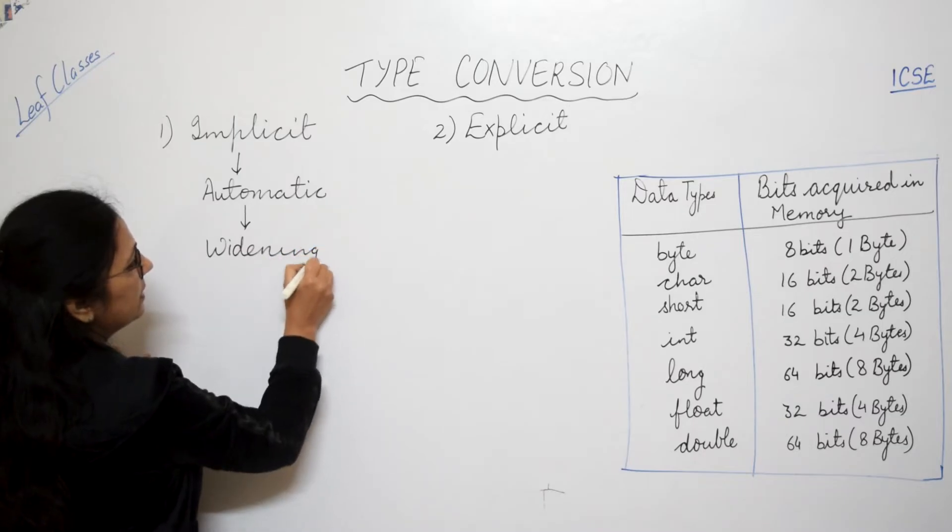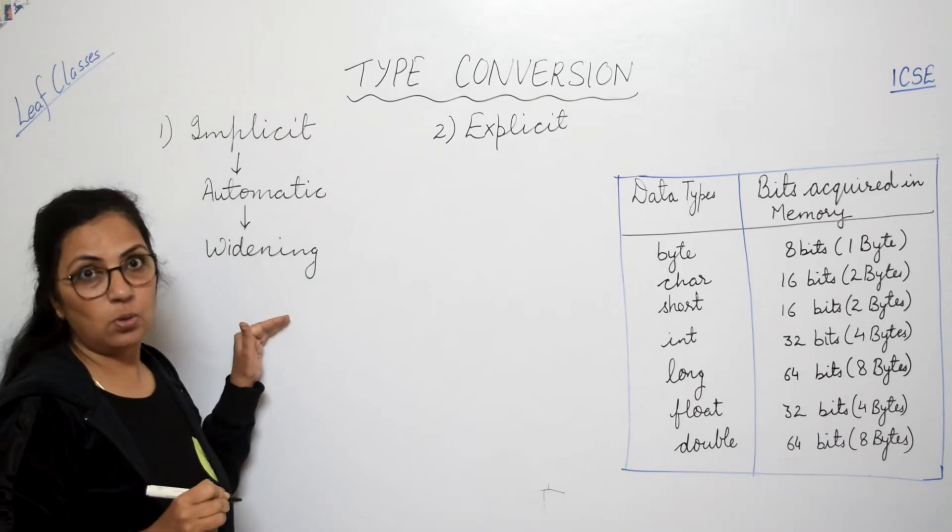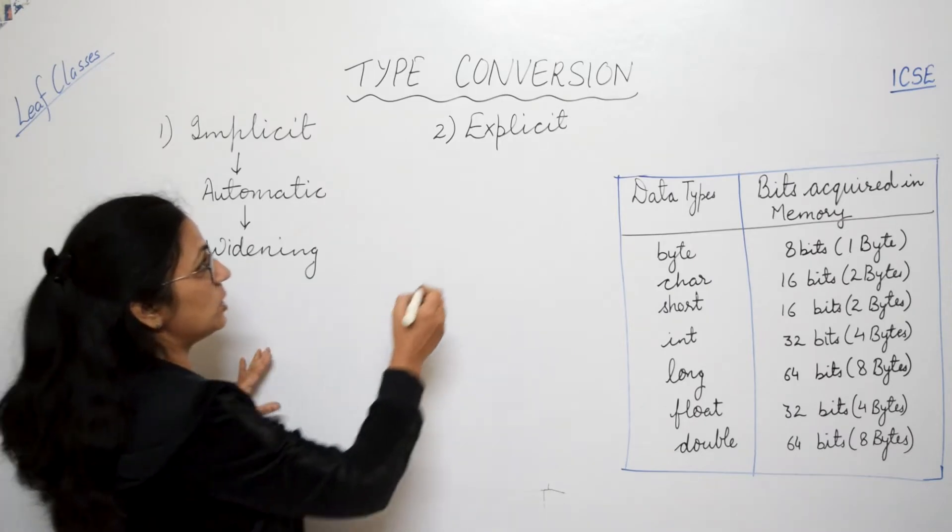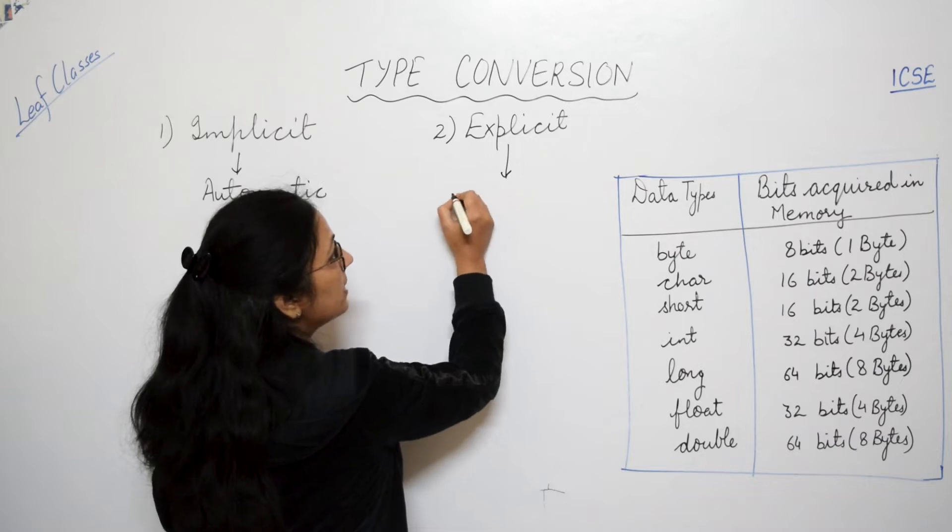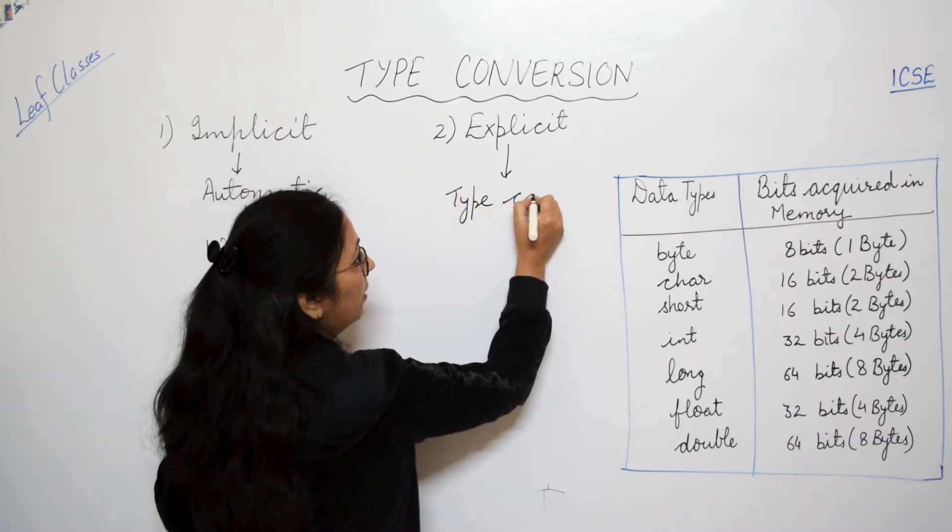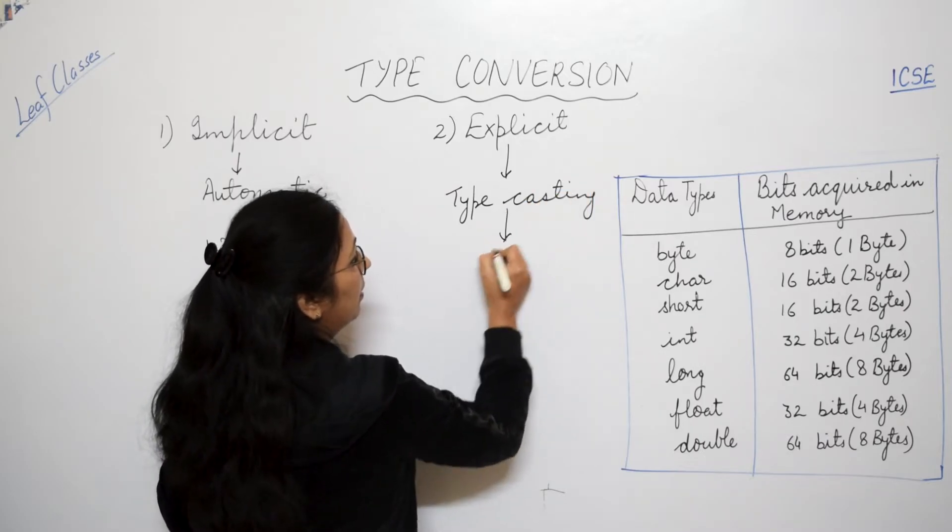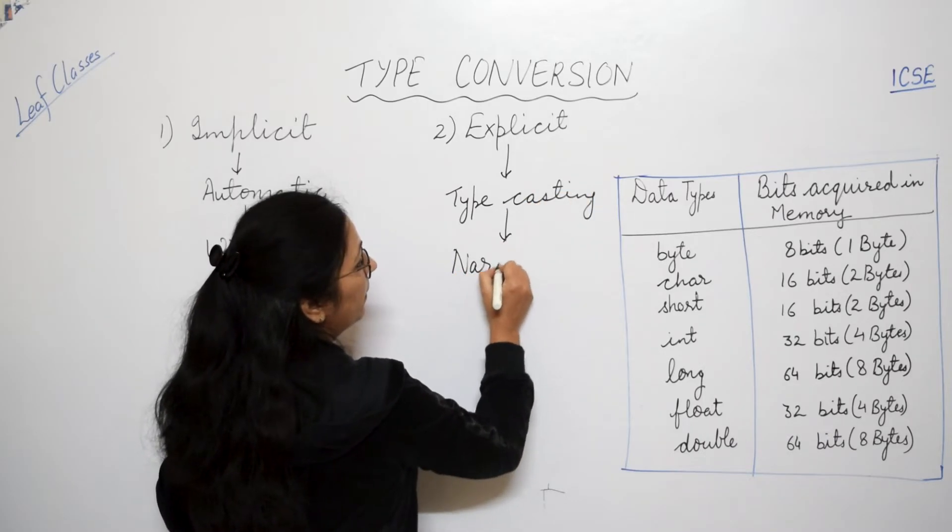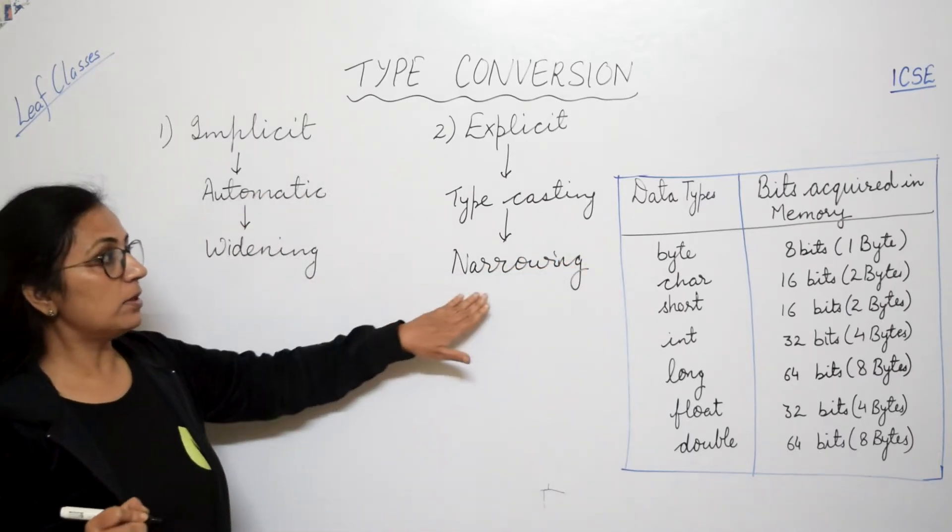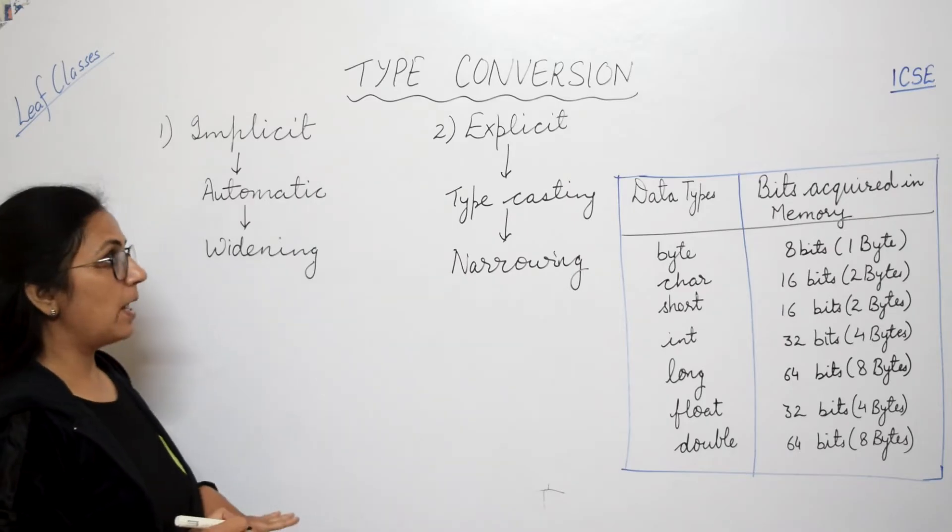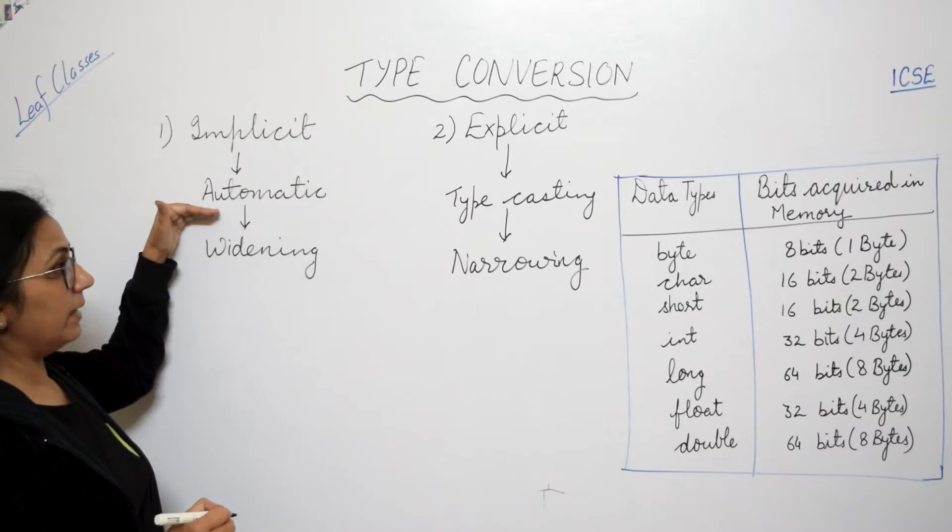Children, this is a little new term which you have not done, but I suppose all of you should know. And this explicit conversion is also known as typecasting or narrowing conversion. This is widening conversion. Now as the name suggests, automatic conversion, automatic means automatically it is done.